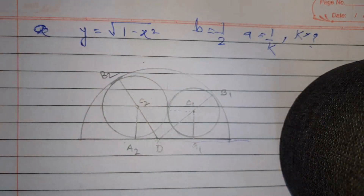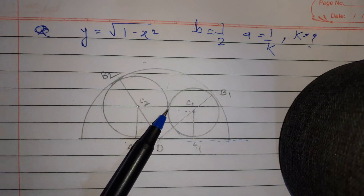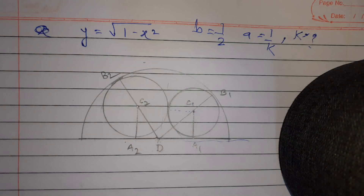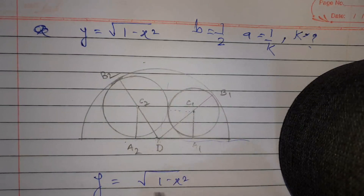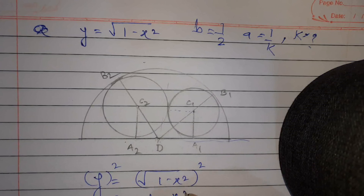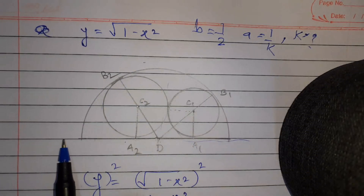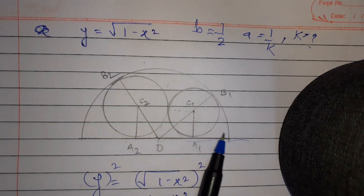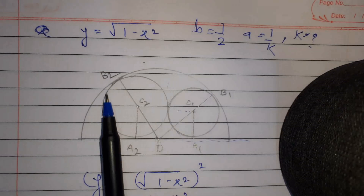These two circles touch each other externally. They are inscribed within the area bounded by y = √(1 - x²) and the x-axis. Simplifying: y² = 1 - x², which gives x² + y² = 1. So the bounding region is the upper semicircle of radius 1 and the x-axis, and both circles lie within this region.